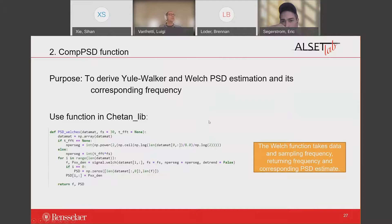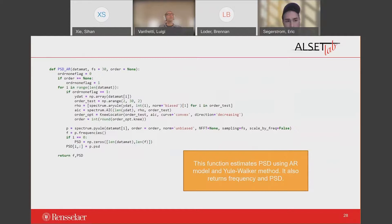The next function used is the COMPSD, which the purpose is to derive the Yule-Walker and Welch PSD estimation along with its corresponding frequency. We use two functions in scipy library: the PSD Welch function and the PSD AR function. The Welch function takes the data and the sampling frequency as input arguments and returns the frequency and PSD estimates. The PSD AR function estimates the PSD using AR model and the Yule-Walker method. It returns the same output as PSD Welch function.